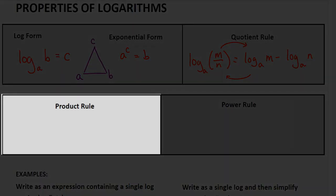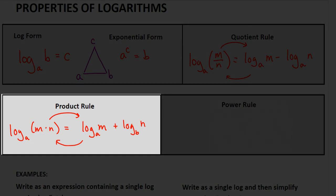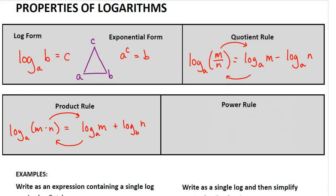Let's look at the product rule. The product rule says if we have the logarithm base a of the quantity m times n, we could break that logarithm up into two pieces: log base a of m plus log base a of n. And we could go the other direction as well. This is based on the rule of exponents that if you're multiplying and the bases are the same, we add the exponents.